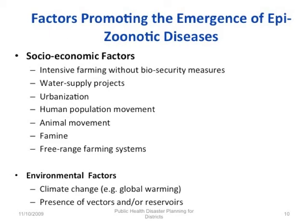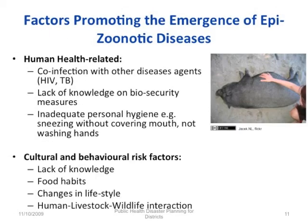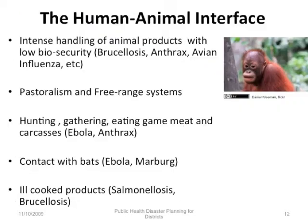Human-related factors include co-infection with other disease agents like HIV and TB, lack of knowledge on biosecurity measures, and inadequate personal hygiene such as sneezing without covering the mouth or not washing hands. Cultural and behavioral risk factors include lack of knowledge, food habits, changes in lifestyle, and human-livestock-wildlife interaction. These are characteristics of the human-animal interface that increase the likelihood of transferring diseases from animals to humans.